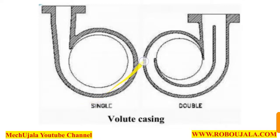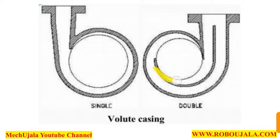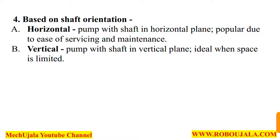As you can see, this one is the single volute design and this one is the double volute. You can see the difference — in double volute it is divided into two chambers, while in single volute there is only one. That is why we call them single volute and double volute.